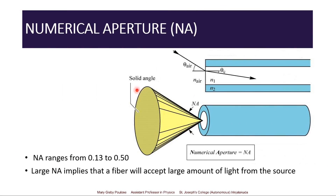In this figure, we understand that light is transmitted into the fiber along the acceptance cone, which defines the numerical aperture and light-gathering ability of the fiber. The values of numerical aperture vary from 0.13 to 0.50. A large value of numerical aperture implies that the fiber can accept a large amount of light from the source.